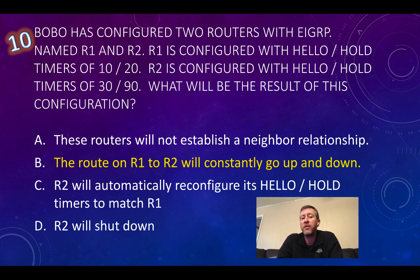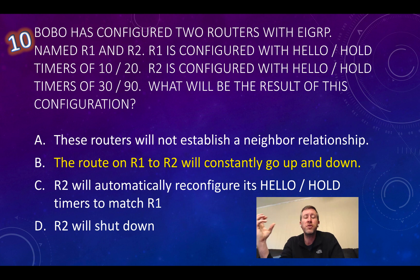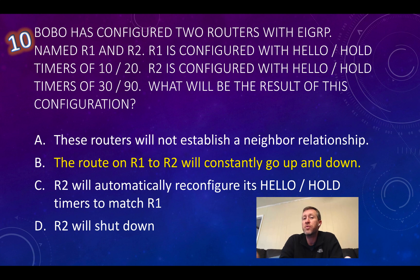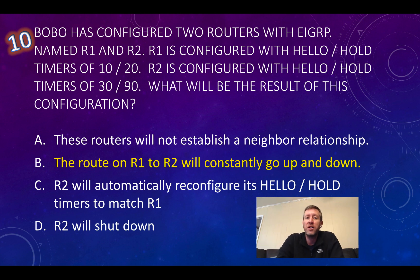However, if a router doesn't receive another message within its hold timer period, it assumes the route has gone down. R2, with hello and hold timers of 30 and 90, sends a hello every 30 seconds. R1 says: if I don't receive a packet within 20 seconds, I'll assume the route is offline. So R1 will receive a hello from R2 and activate the route — but 20 seconds later, having not received another hello within its 20-second hold period, it marks the route down again. Then when R2 hits its 30-second hello interval, R1 briefly reestablishes the connection before dropping it again. This cycle will continue indefinitely. I hope you've enjoyed these practice questions for the Cisco CCNA and CCENT exams.